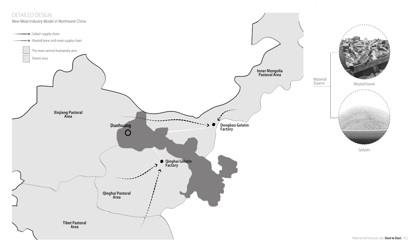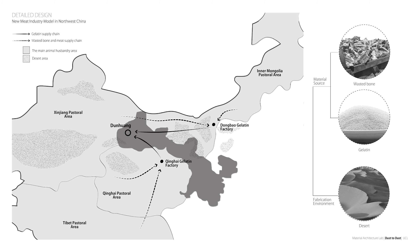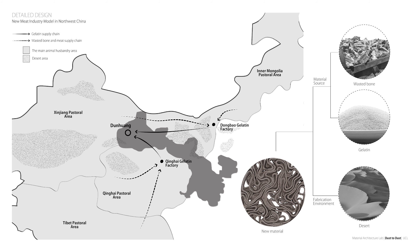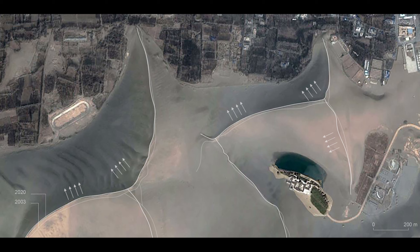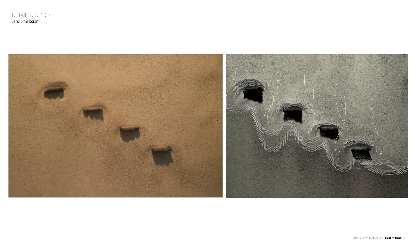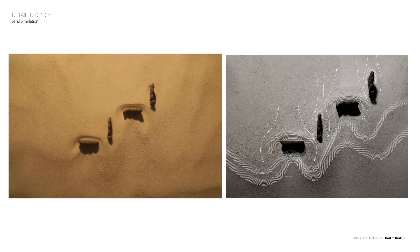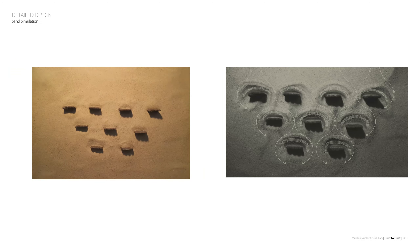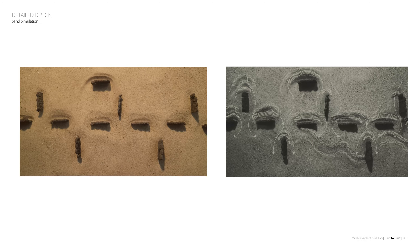Dust2Dust proposes a landscape remediation program between a meat processing plant and the desert. The animal waste from animal husbandry is repurposed into gelatin. This binder is used to produce components for structures that sit in the desert and act as landscape control for increasing sandstorms. The design of the construction site is driven by the movement of the sand dunes. The movement direction of the dunes over the past two decades has identified three sandstorm heavy disaster areas in neighboring cities. A sand simulation test found that an L-shaped staggered building structure can effectively slow down the speed of sand movement.